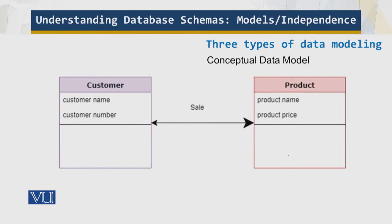Let's look at this example. In the conceptual data model, Customer is an entity and Product is an entity. Every customer has a name and a customer number or customer ID. A product can also have an ID and a price. The relationship between a customer and a product is that a product is sold to a customer, and a customer purchases a product. You can see the level of detail in this conceptual data model.